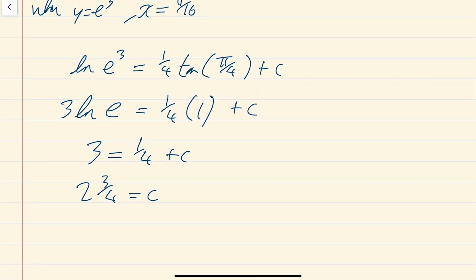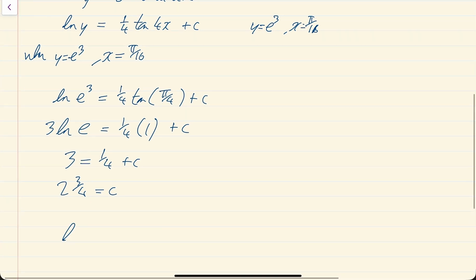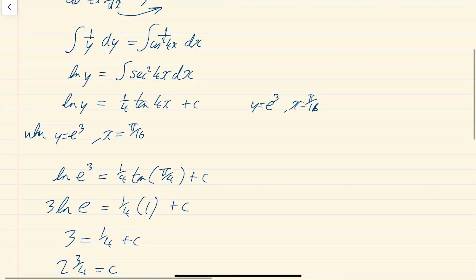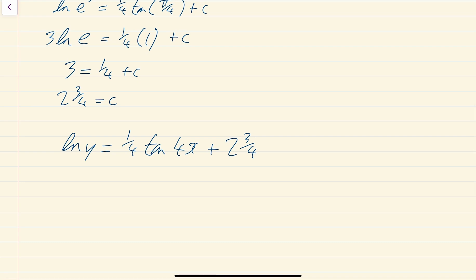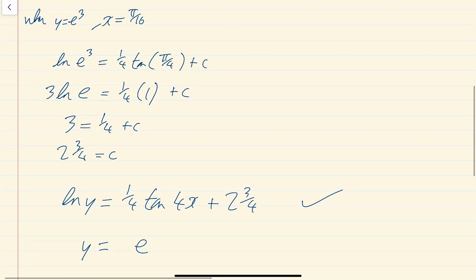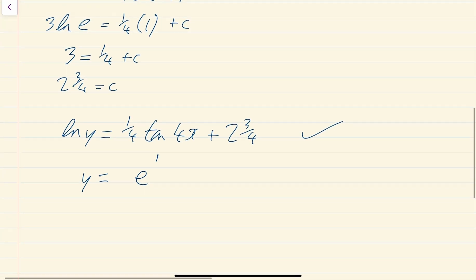And then write your equation again. It was ln of y equals 1/4 tan 4x plus 2 and 3/4. And I would imagine that is enough for you. It just says solve the differential equation. That's the differential equation solved. You could write it, I suppose. I reckon that would give you your marks, but you could write it. You could write that as y equals e to the power of 1/4 tan 4x plus 2 and 3/4. That's not really much benefit of doing that. I would probably leave it well alone with the previous version.